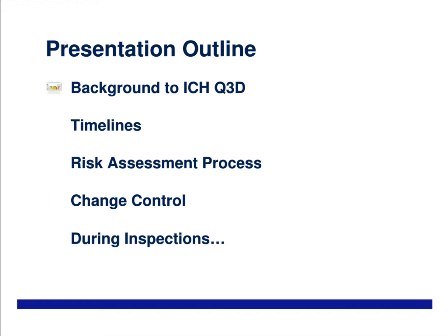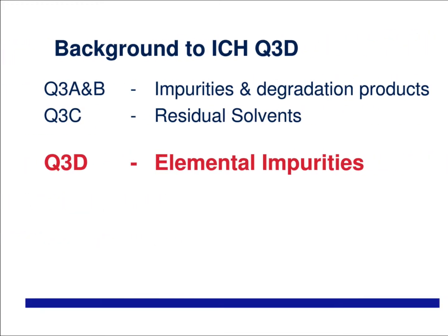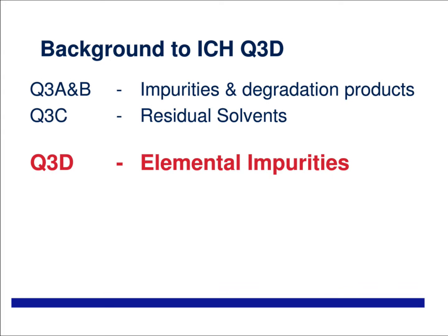First we'll start with the background. ICH Q3D was conceived to supplement Q3A and Q3B, which concentrate more on organic impurities and degradation products, and also Q3C, which identifies acceptable levels for residual solvents. Q3D itself specifically relates to identifying acceptable limits for elemental impurities that provide no therapeutic benefit and which may be present in a drug product.